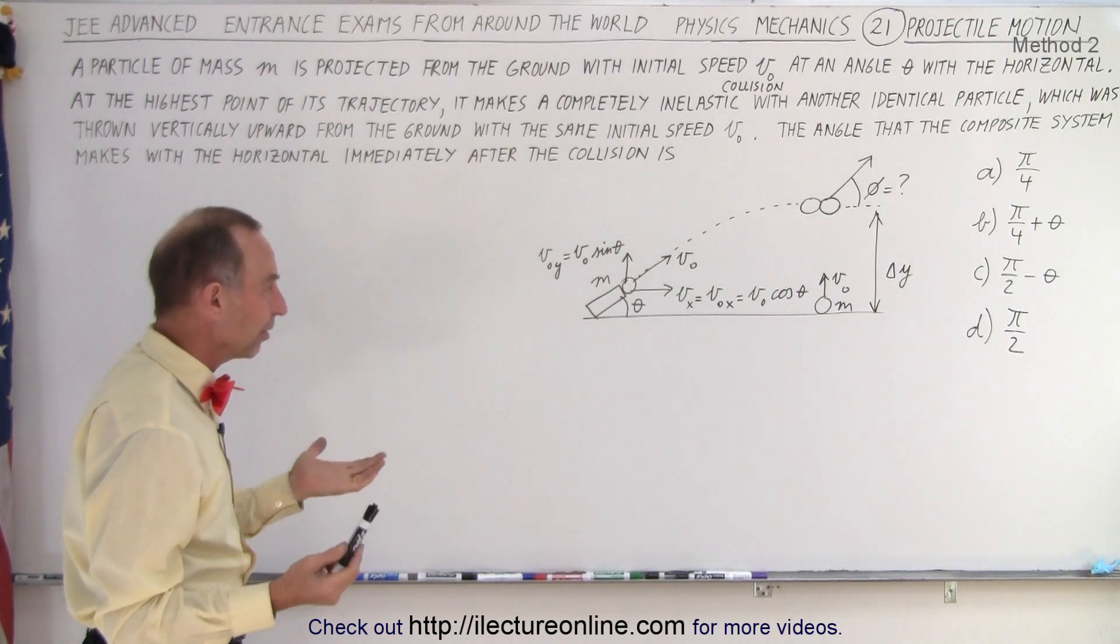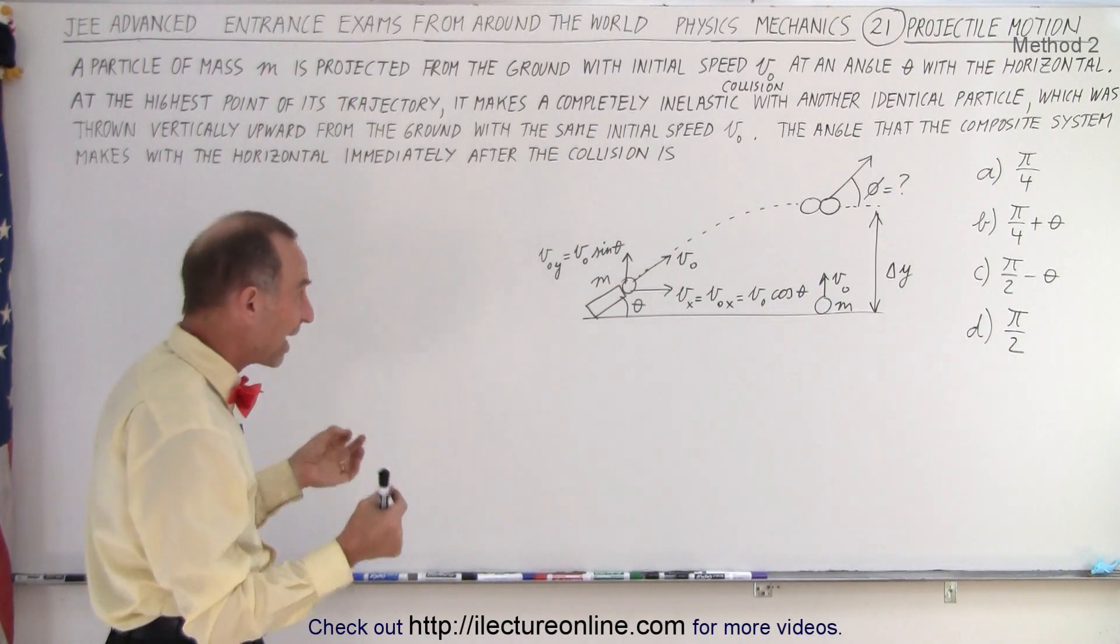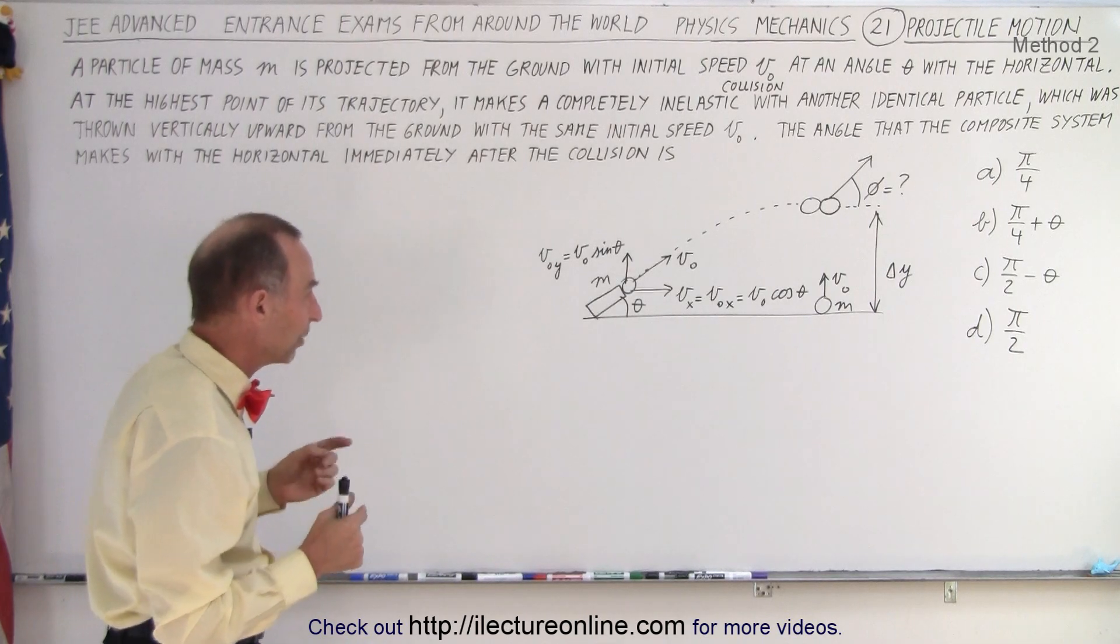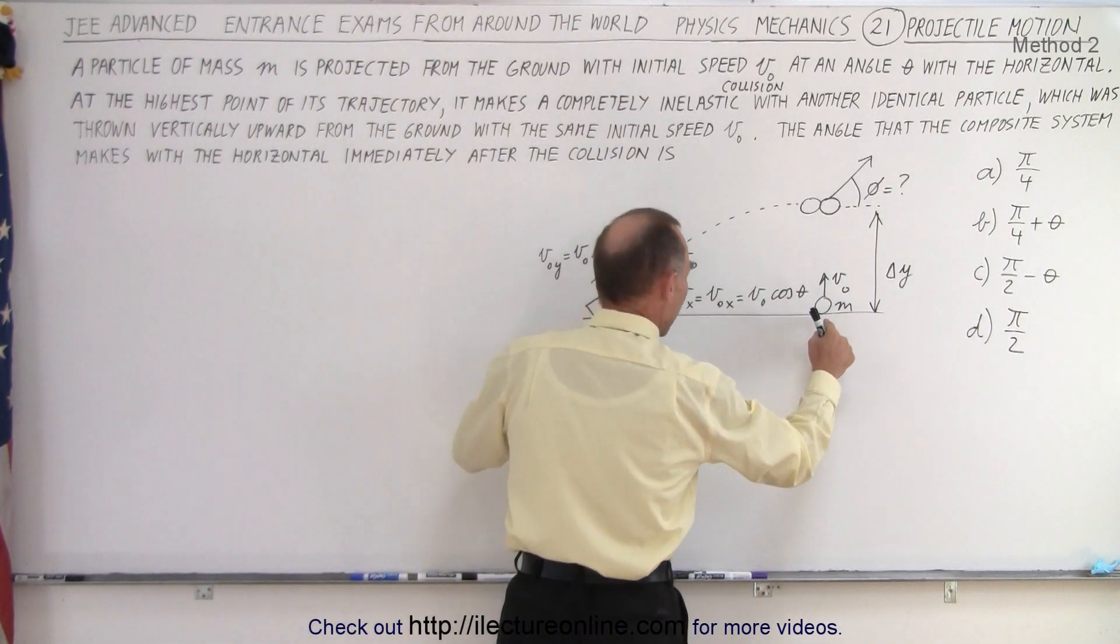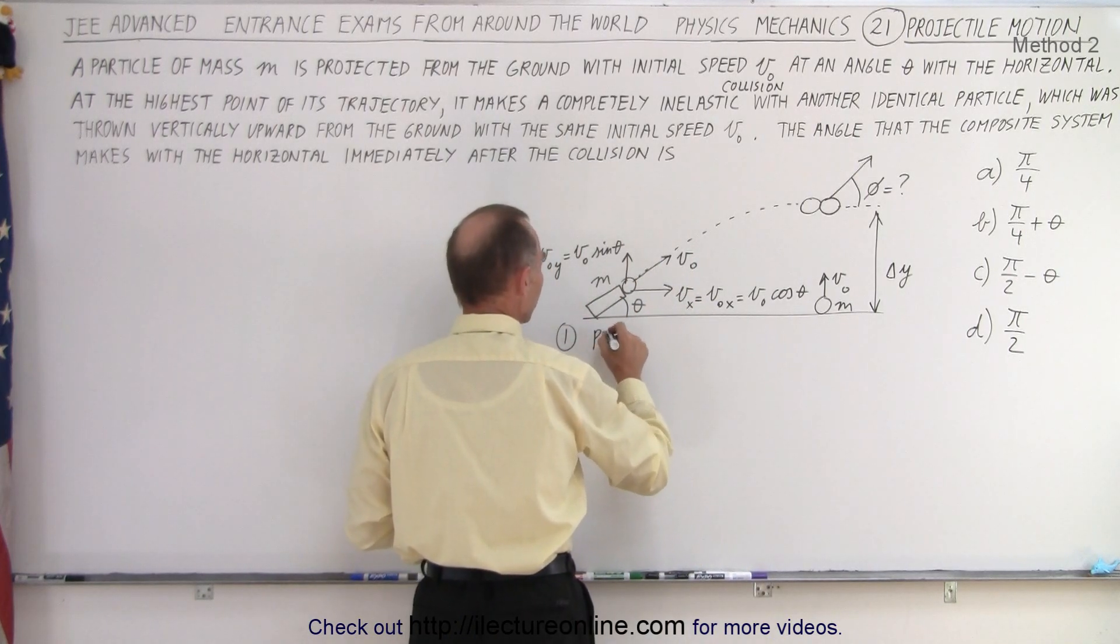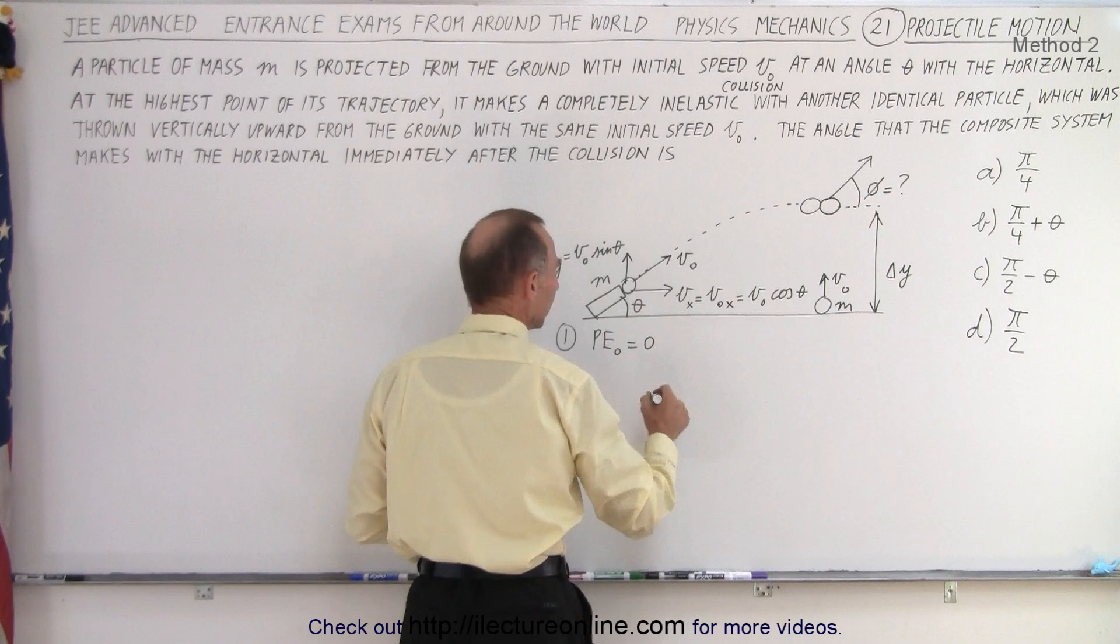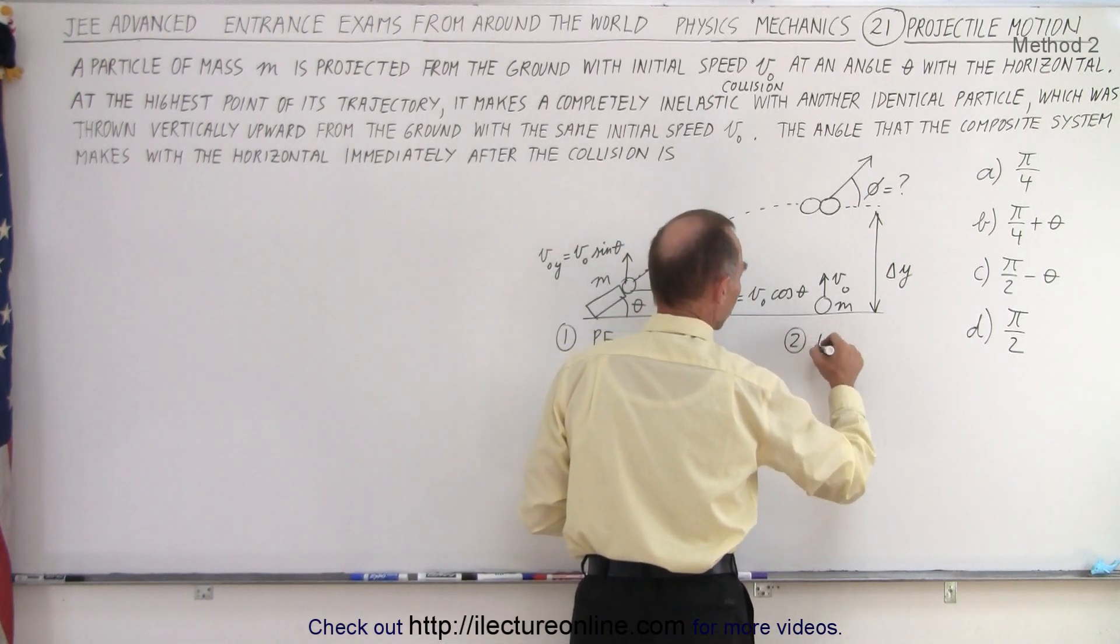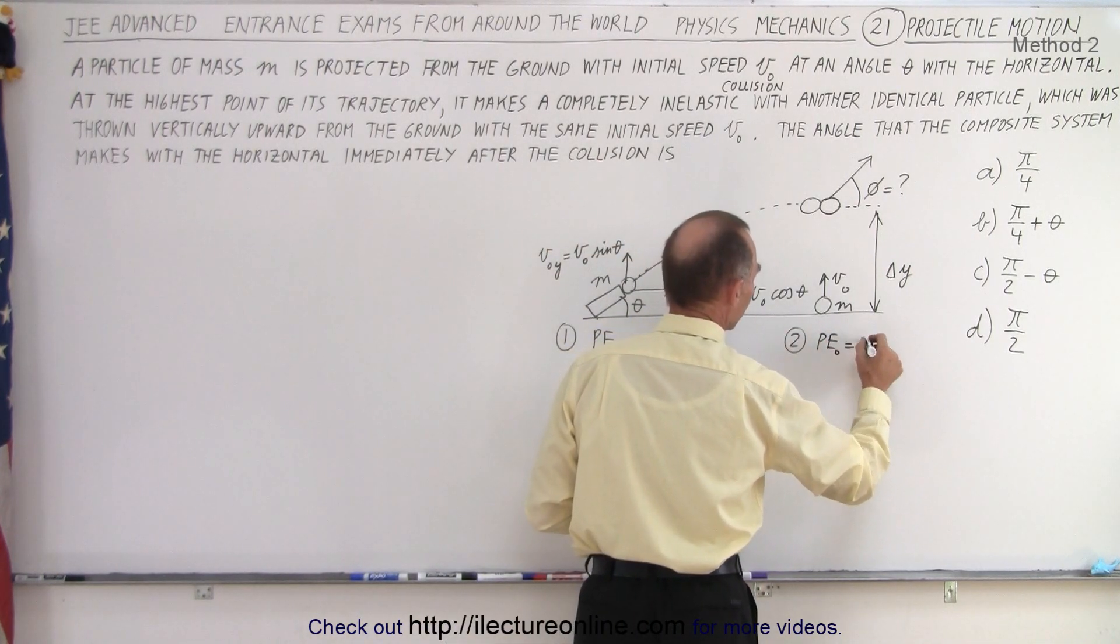So the way to think about it is this. Since they start out with the same initial velocity and they start out at the same location above the ground, you could say that for particle number one, the potential energy initial equals zero. For particle number two, the potential energy initial equals zero.